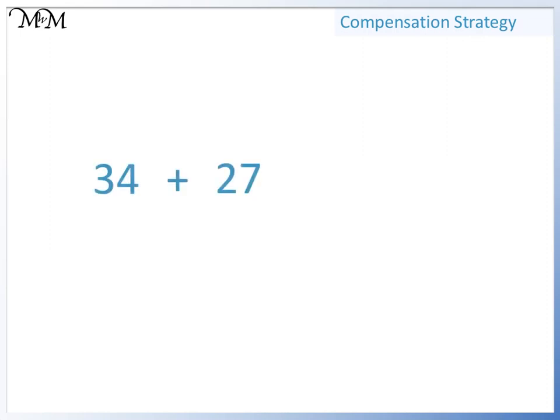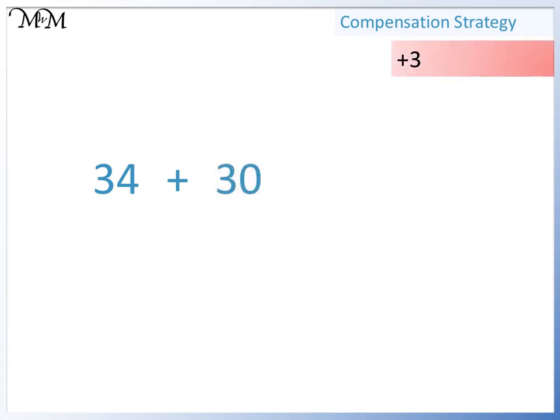Here we have 34 plus 27. To make this calculation easier to work out mentally, we can add 3 to 27. We can now easily add these two numbers. 34 plus 30 equals 64.